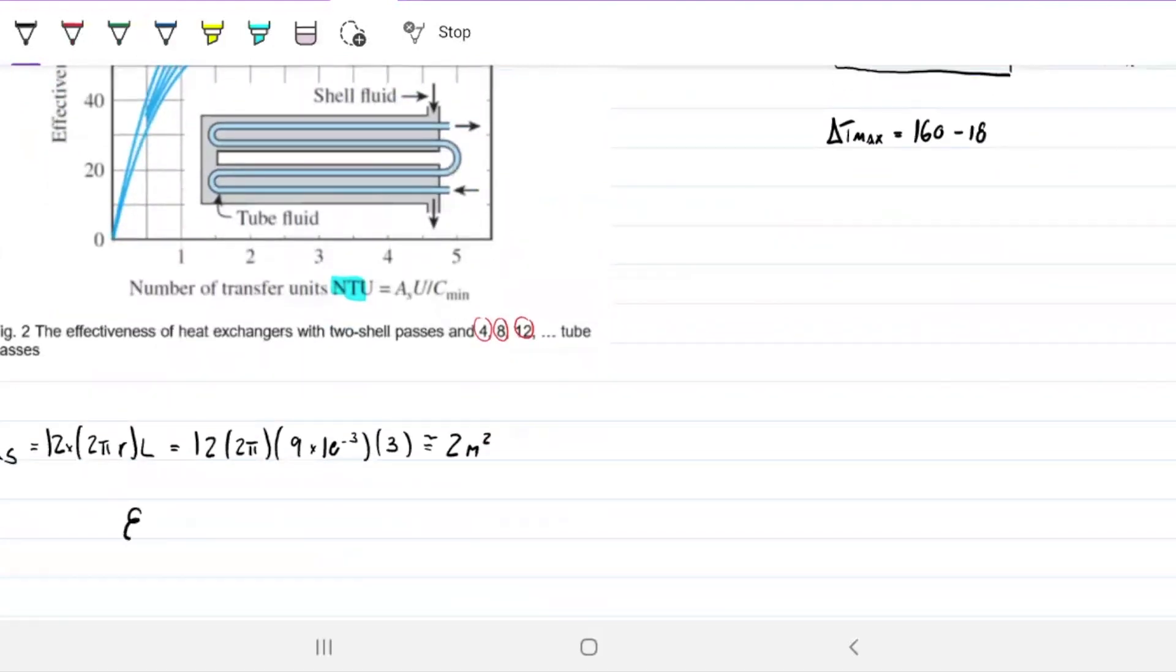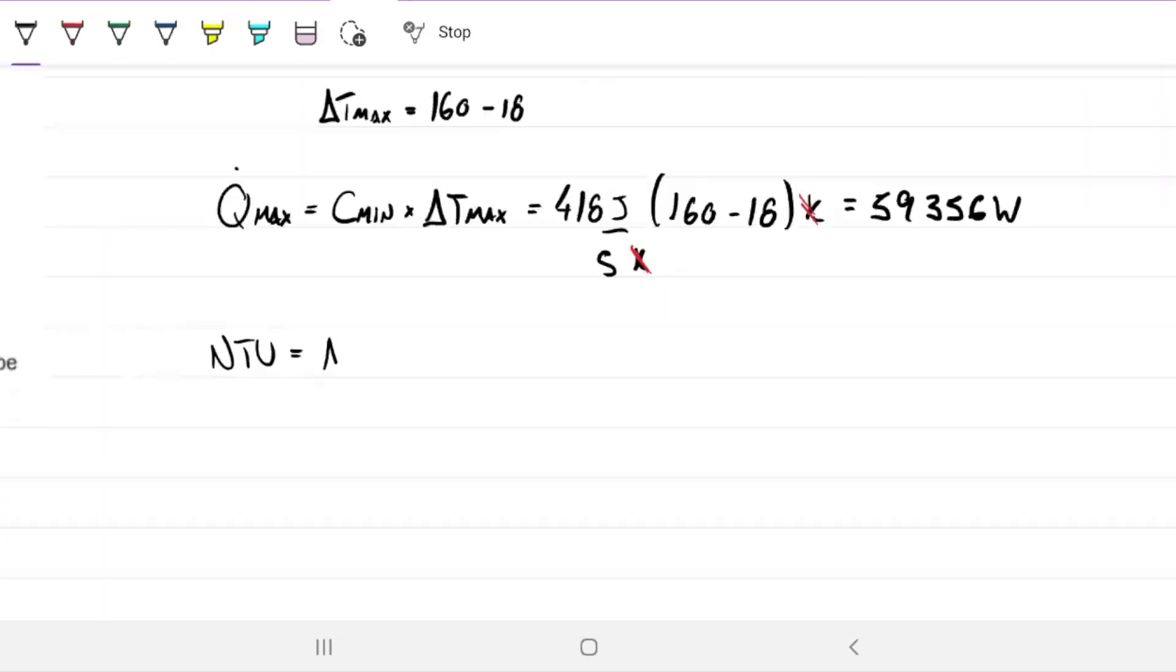Check out the idea. If the effectiveness is Q actual over Q max, then my Q actual equals the effectiveness times Q max. So if I can find my Q max and my effectiveness, I can find Q actual. With Q actual, I can find the outlet temperatures. So our game plan is to find what is this fella and what is this fella.